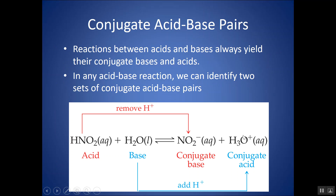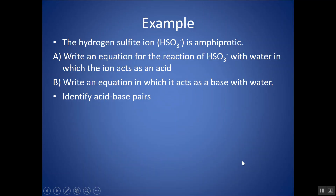You may be asked to write a reaction. In any acid-base reaction you can always identify two sets of conjugate acid-base pairs. Whatever acts as the acid — once you remove the H+ — what it turns into is its conjugate base. Whatever acts as the base — once it accepts the H+ — turns into its conjugate acid.